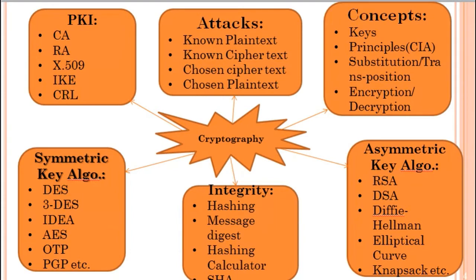In PKI, CA means Certification Authority. A certification authority is a trusted third party that issues electronic documents verifying the digital identity of entities on the internet. These electronic documents, called digital certificates, are essential for secure communication and play an important role in PKI. RA means Registration Authority, which verifies user requests for a digital certificate and tells the CA to issue it.